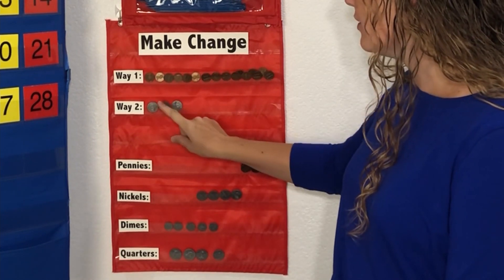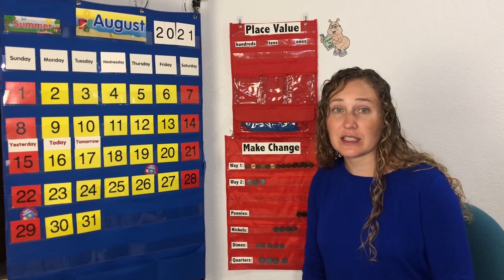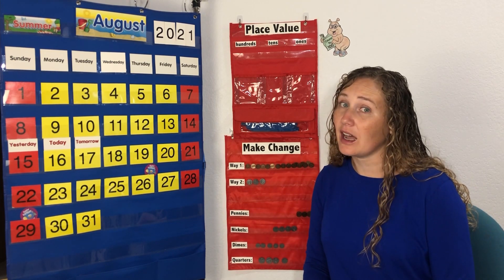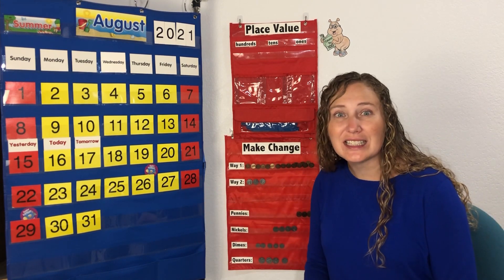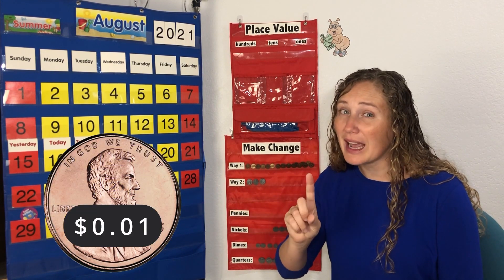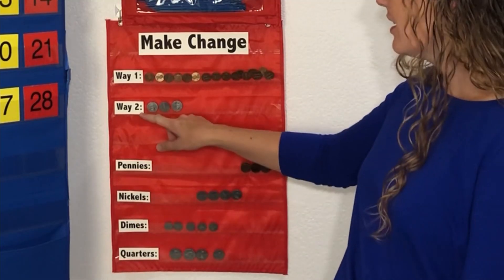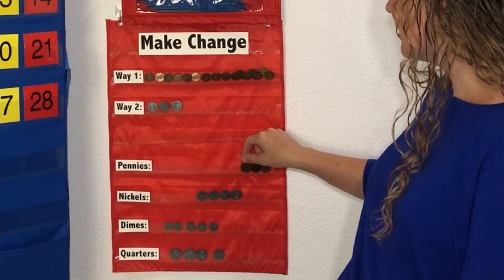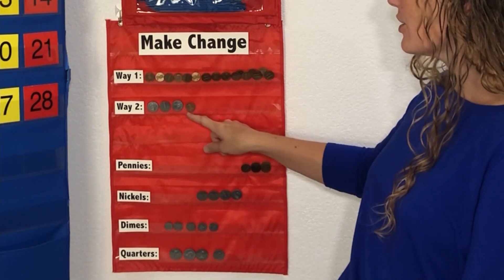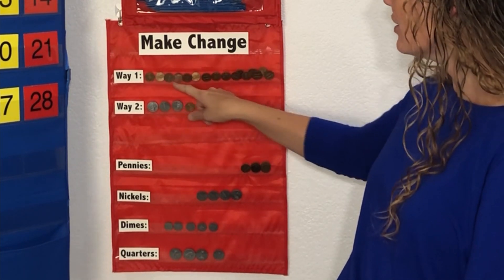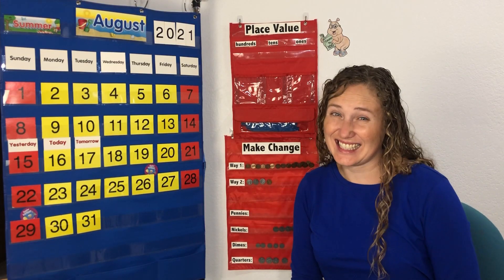Five, 10, 15. We're at 15 cents with nickels, but that's not enough — we're trying to get to 16. We'll need to use one penny to get the rest of the way. 15, 16. That definitely used less coins than using all pennies — two ways to make 16 cents.